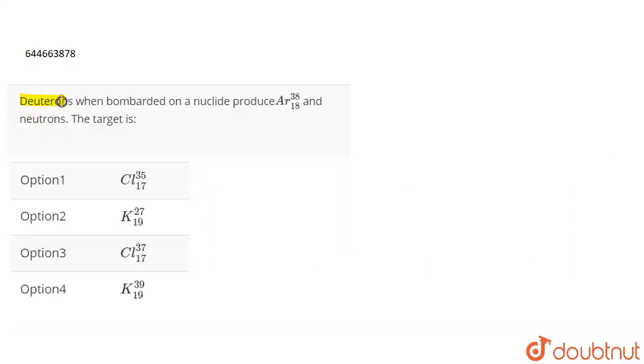The question is, neutrons when bombarded on a nucleide produces argon 38-18 and neutrons. The target is?